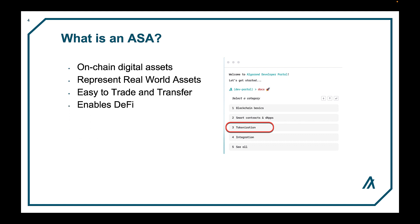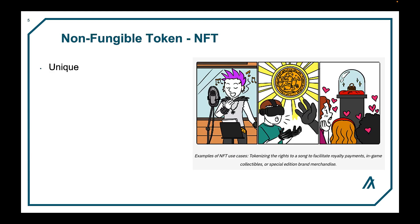ASAs are an important part of the Algorand ecosystem as they enable the creation of new financial products and services on the blockchain, known as DeFi or decentralized finance. Until now, we had to go to a bank to do this. Non-fungible tokens or NFTs are assets that are unique on the blockchain, meaning only one can exist. Digital art and collectibles are types of NFTs.